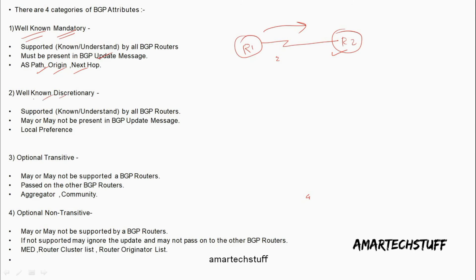Well-known discretionary: well-known again means supported by all routers. Discretionary means the attribute may or may not be present in the BGP update — that is the only difference between well-known mandatory and well-known discretionary. An example of a well-known discretionary attribute is local preference.